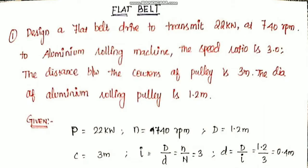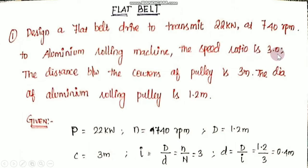I am going to design a flat belt drive to transmit 22 kW at 740 RPM to an aluminum rolling machine. The speed ratio is 3.0. The distance between the centers of the pulleys is 3 meters. The diameter of the aluminum rolling pulley is 1.2 meters.